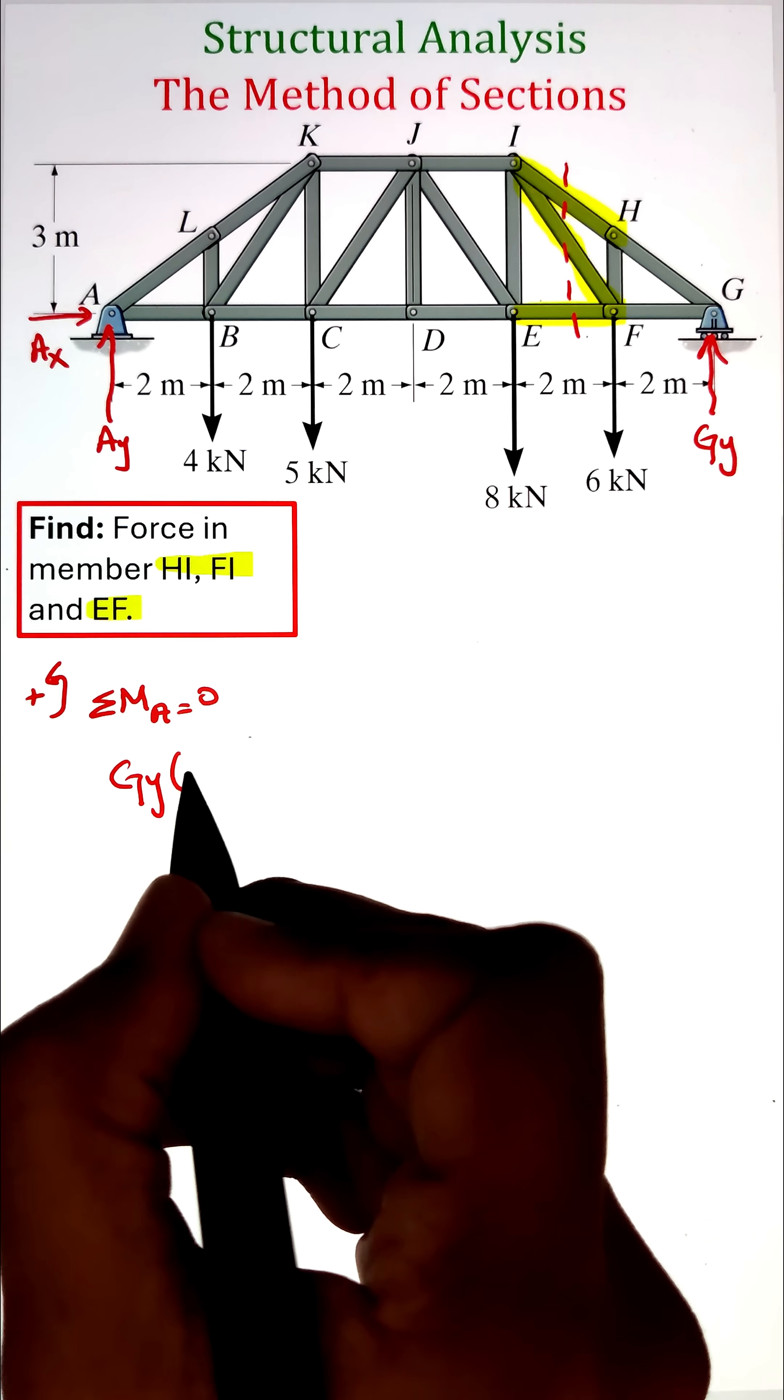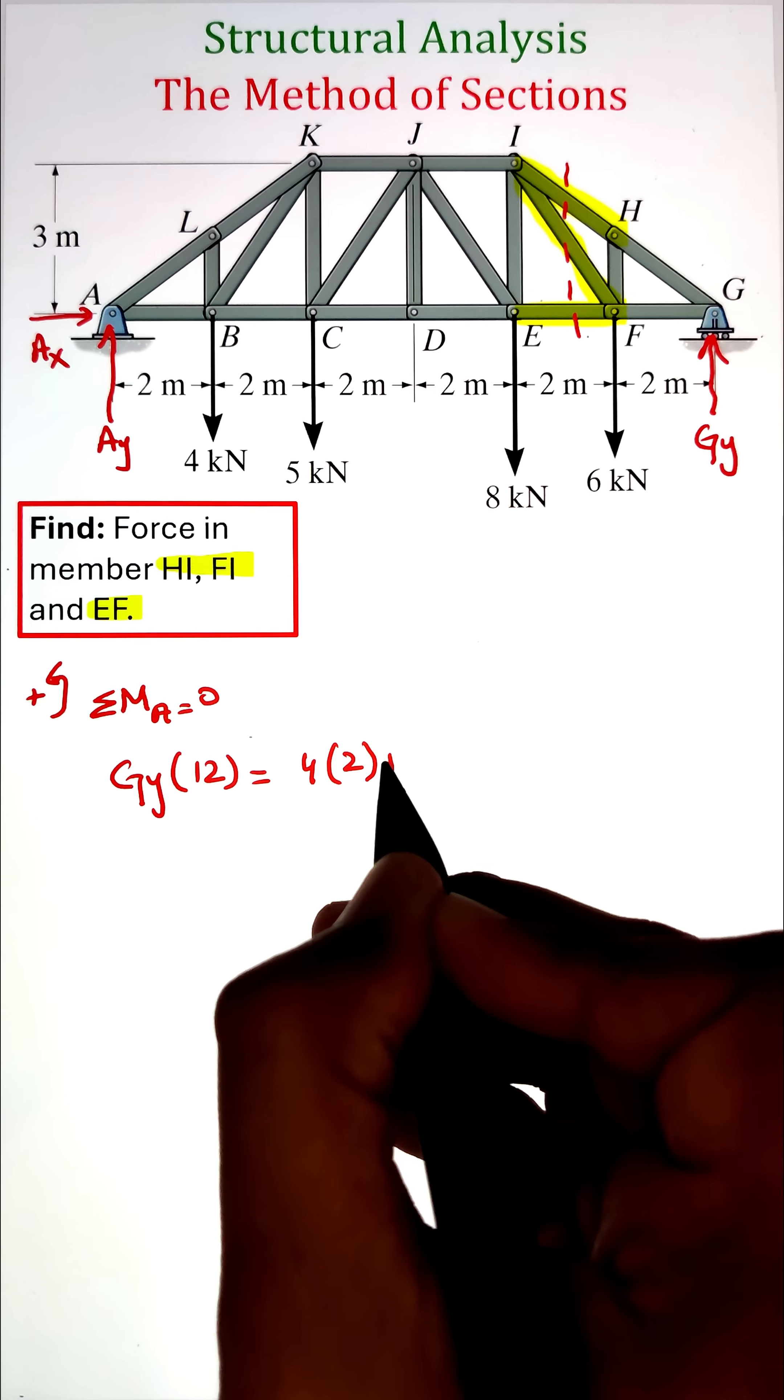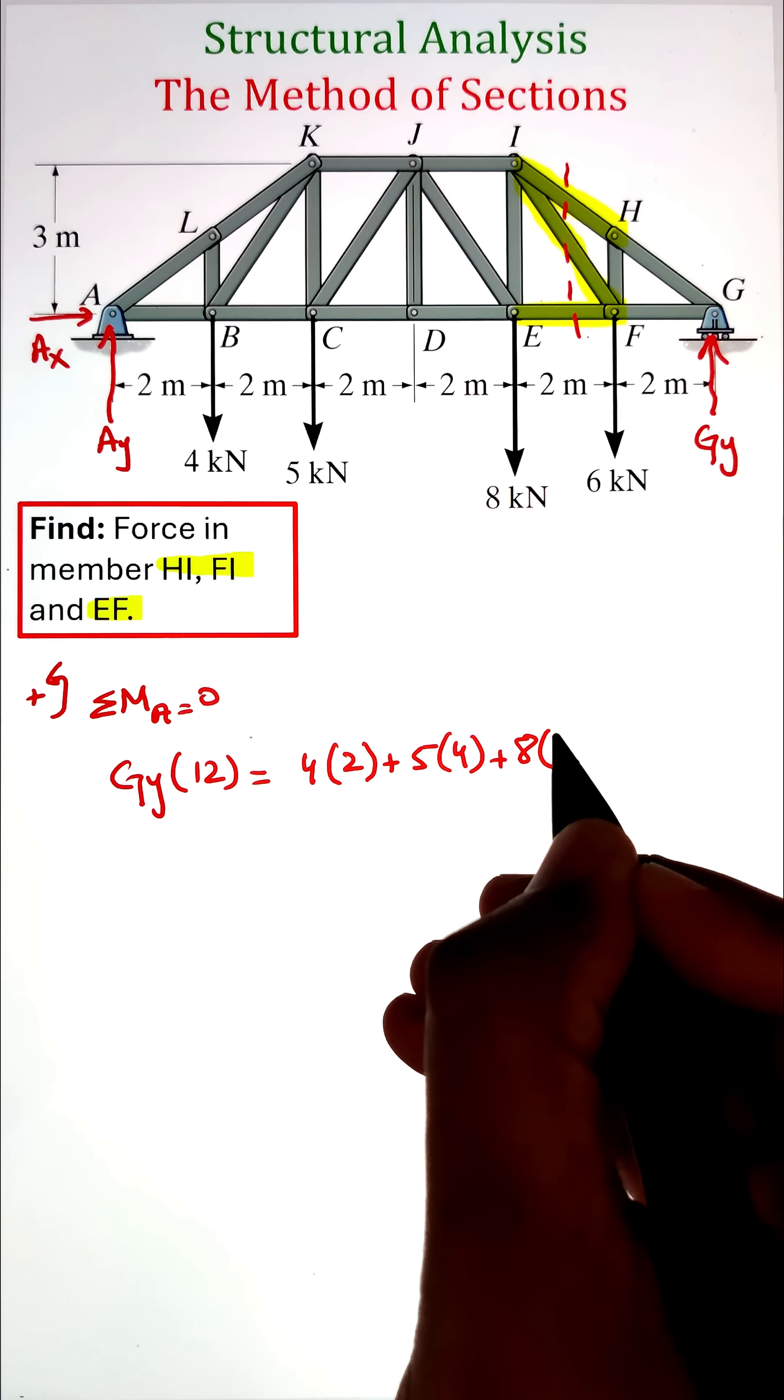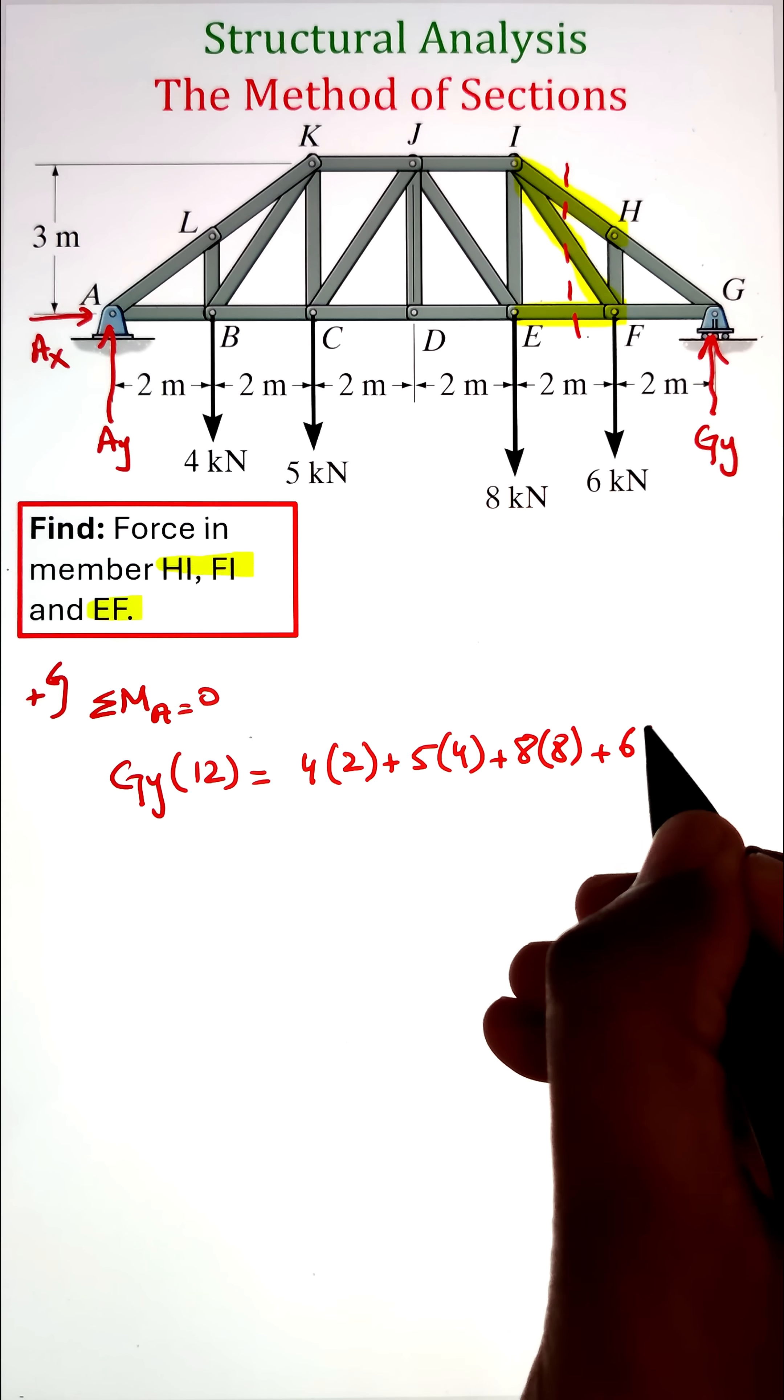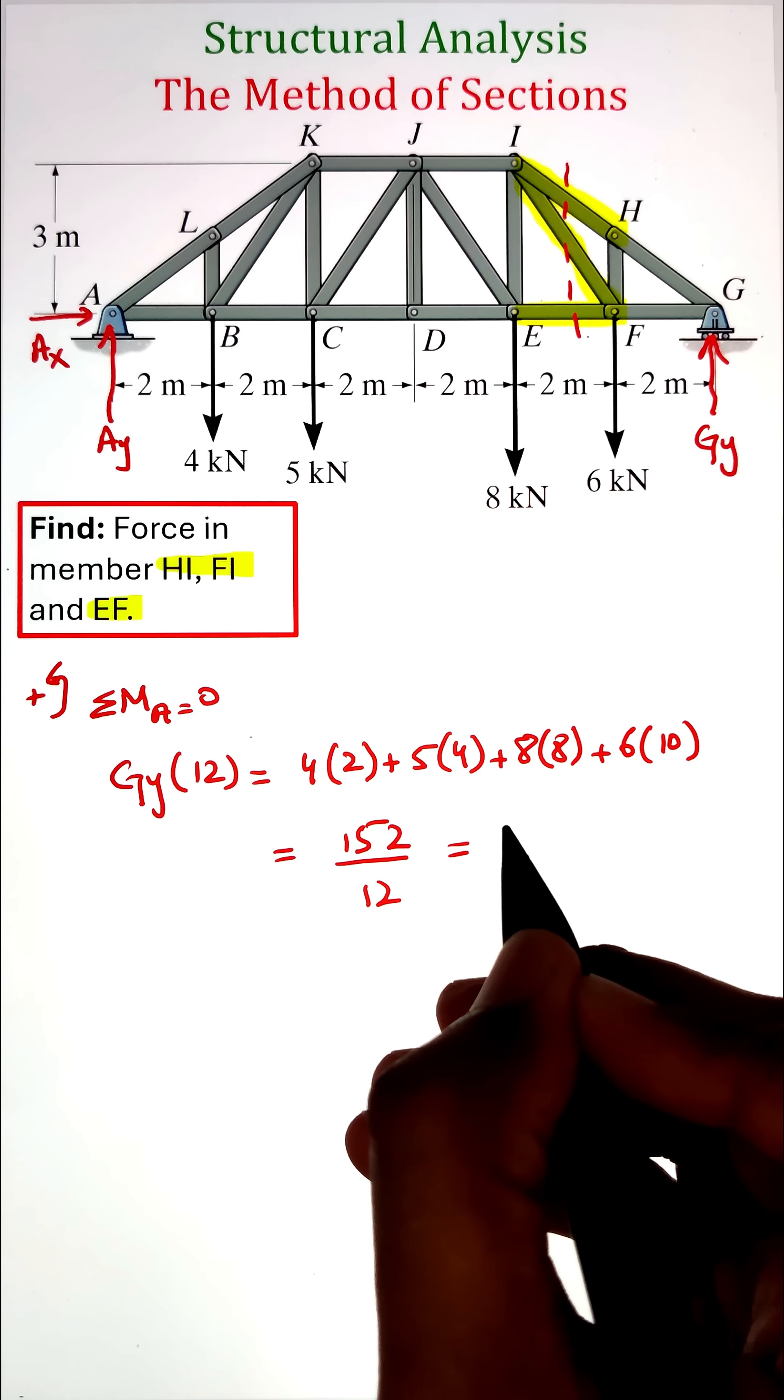Along that half, we have a support reaction at G, which is a roller, and we need to first identify those support reactions. Let's consider the whole structure and write our equilibrium equation. To find the support reaction at G, I can write the summation of moments at point A equals zero and solve for Gy, which is 12.66 kilonewtons.